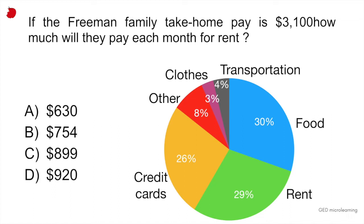If you look at the blue part of the graph, they spend 30% of their money on food, 29% on rent. They spend 26% on credit cards, which is the yellow section, etc.